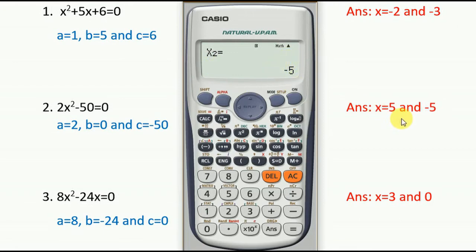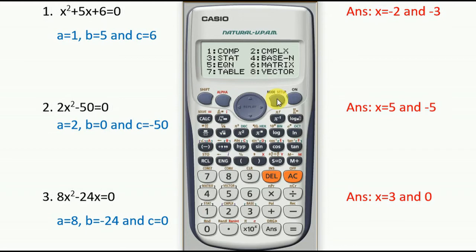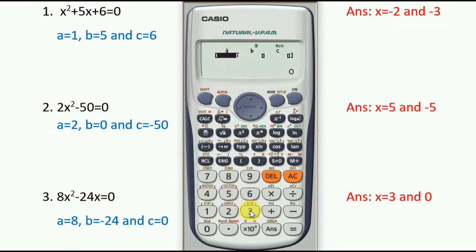Finally, let's go to equation number 3. Press More and 1 to delete all saved values. Then press Mode, go to equation at number 5, press 5. This is also a quadratic equation, so press 3.